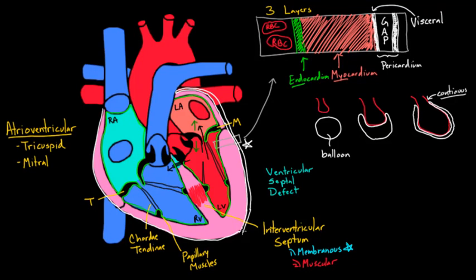So that's called the visceral pericardium. And then this outer layer, the one I'm drawing now, is called the parietal pericardium. Parietal. And that's the layer that actually is on the outside. So let me label that as well. So that's this guy. That would be the parietal pericardium.